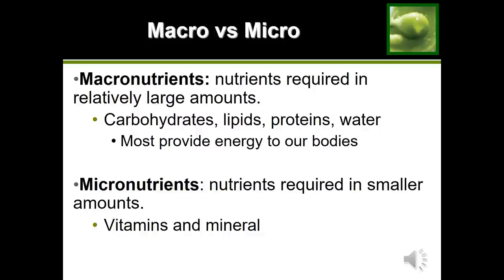Another way to categorize our nutrients is as micro and macronutrients. Macro means large and micro means small. Macronutrients are the ones found and required in large quantities — carbohydrates, lipids, protein, and water. Those nutrients are also found in larger quantities in our bodies and in foods, and so they are referred to as the macronutrients.